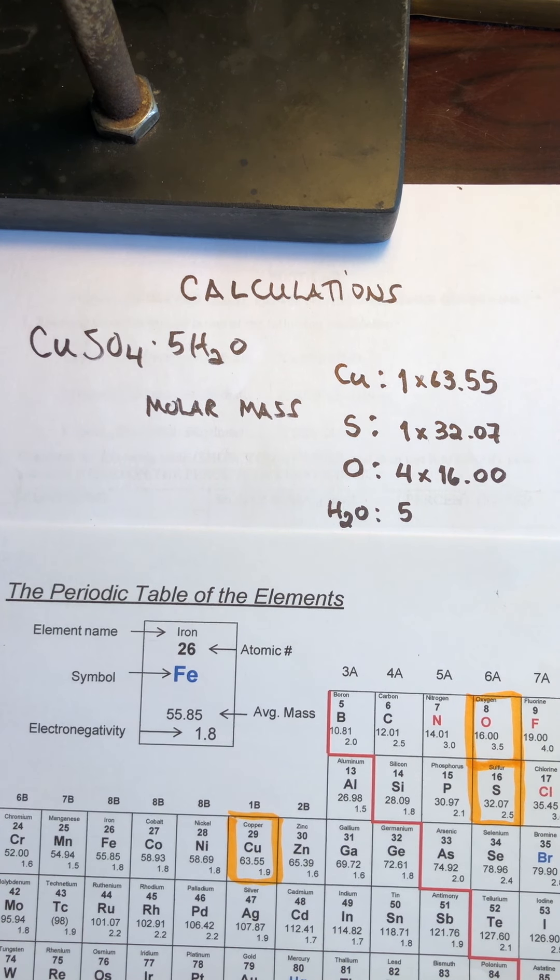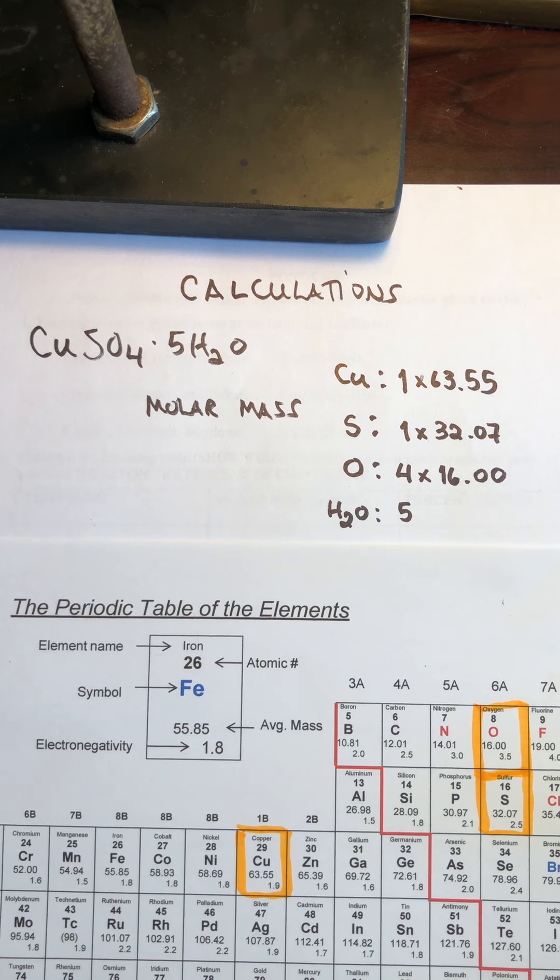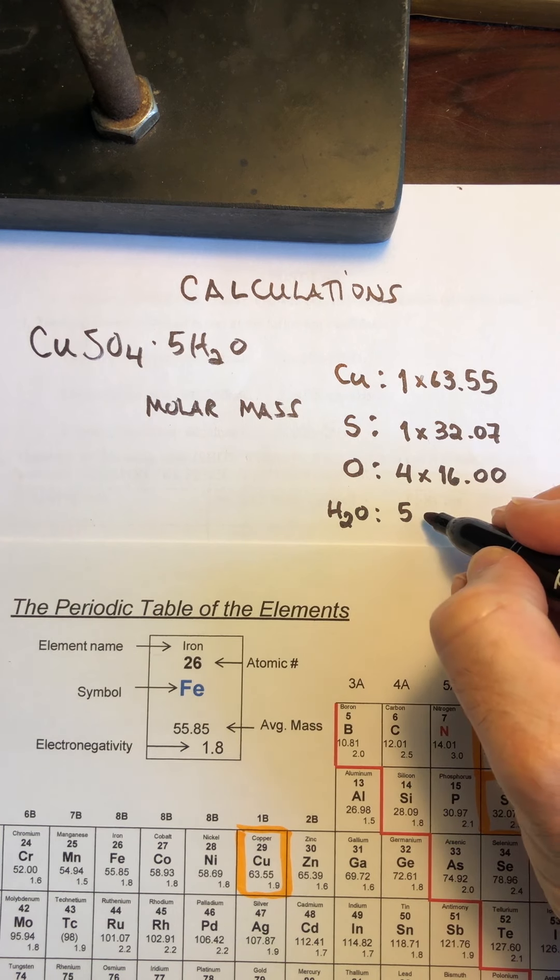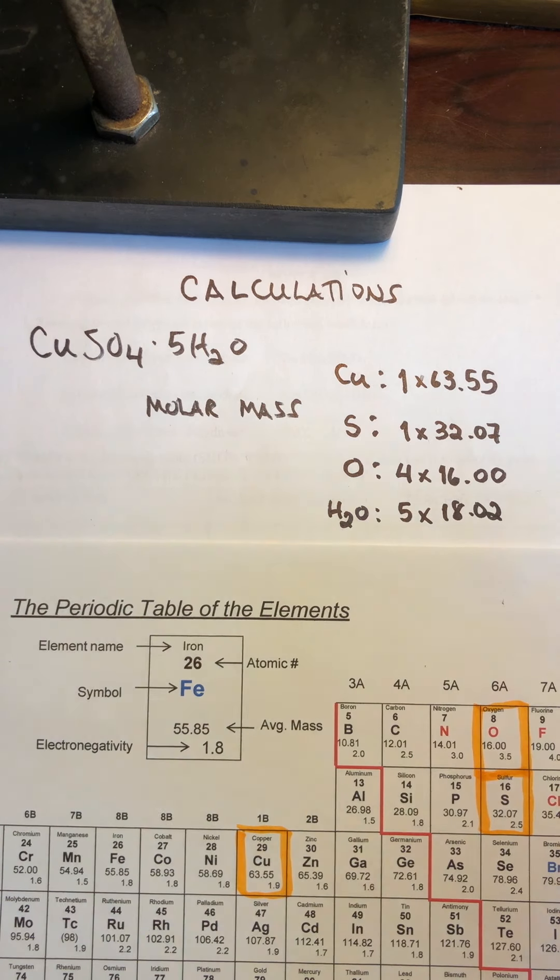Oxygen is 16.00. I know that you guys know how to do this. I'm just doing it slowly just to make sure that it gets imprinted in your minds as a skill that by this point you should be masters of. All right, water molecules are 18.02 grams per mole each, right?